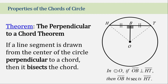The theorem states that if a line segment is drawn from the center of the circle, perpendicular to the chord, then it bisects the chord. In the illustration, circle O — if segment OB is perpendicular to segment HT, we can conclude that OB bisects HT, meaning this line divides HT into two equal parts.